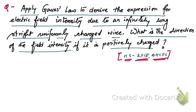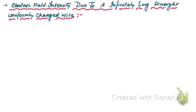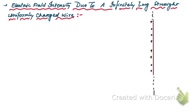Let me take a new slide to write the answer. Let us consider a straight wire which is uniformly and positively charged — an infinitely long wire extending in both directions.